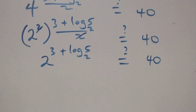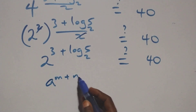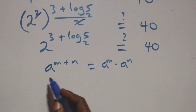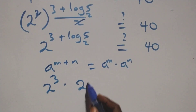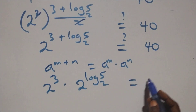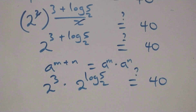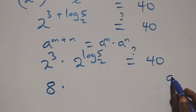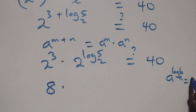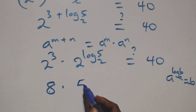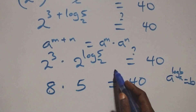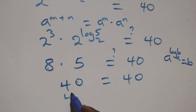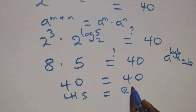Applying the exponent rule a^(m+n) = a^m × a^n, we get 2 raised to power 3 times 2 raised to power log₂5. Now 2 cubed equals 8. And using the rule a^(log_a b) = b, we have 2^(log₂5) equals 5. So the result is 8 times 5, which is of course 40. The left-hand side equals the right-hand side, confirming our answer.